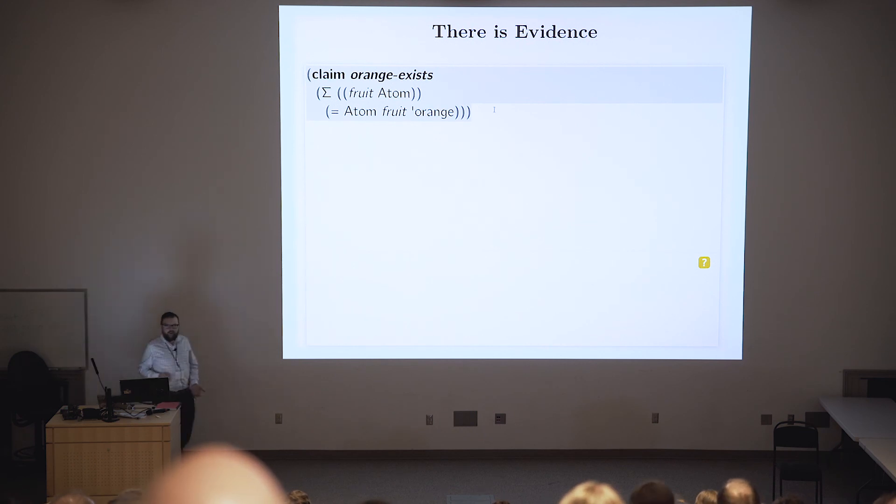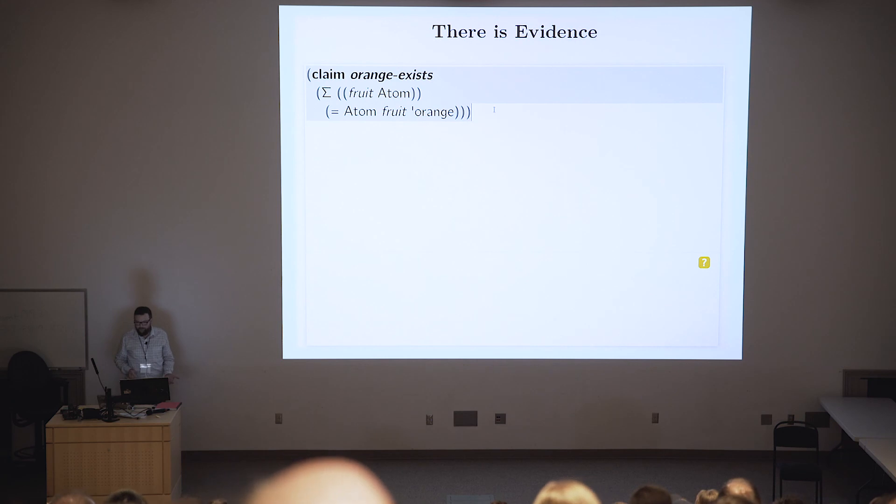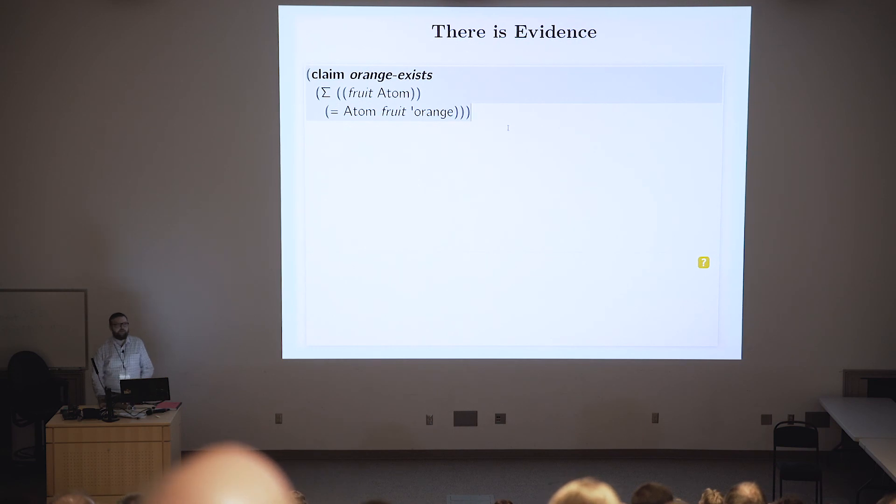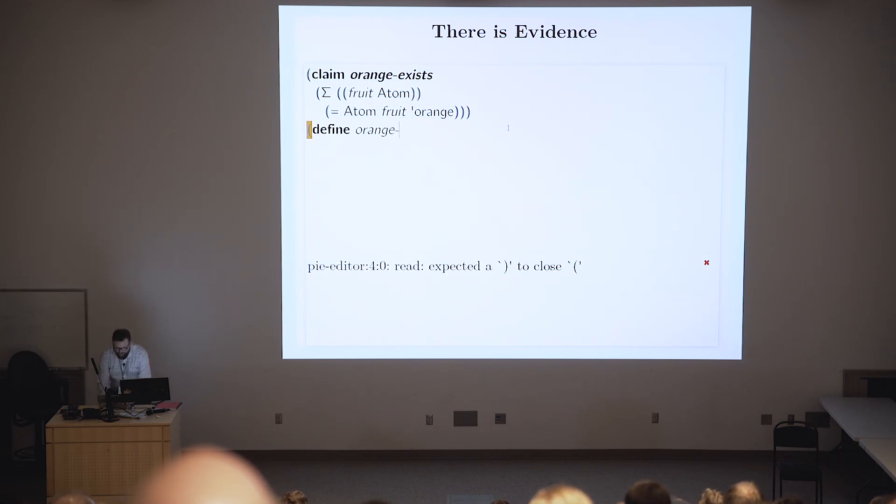So when we're talking about dependent types as proofs, then we're really talking about evidence, right? And one thing we might want to talk about is the evidence that a thing exists, and we write that with a sigma. So one way you can read this statement is as there is some fruit, which is an atom, and atom is what we call symbols here, such that that fruit and orange are equal atoms. And what might a proof of this look like? Well, sigma is a fancy way of talking about pairs. So we can say, define orange-exists, and we say, cons, apple, same, apple.